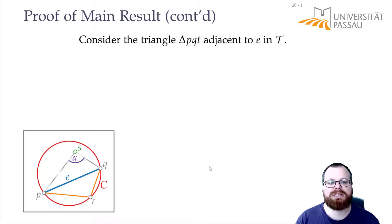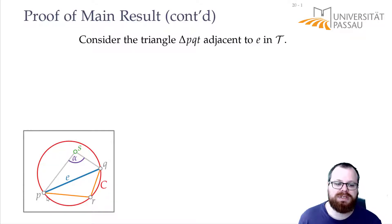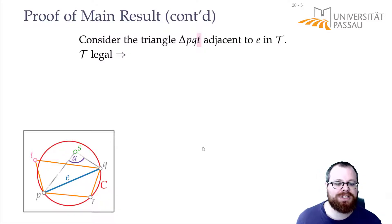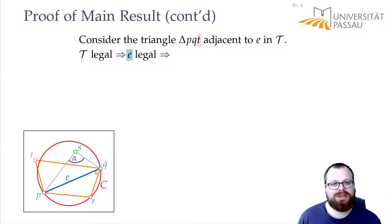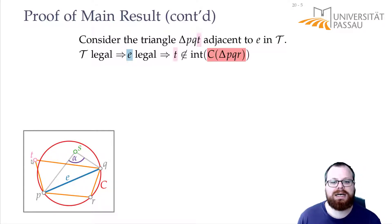Now I want to look at a different triangle. We have edge E, which lies at triangle PQR, but it also has to lie at a different triangle — the triangle with PQ and a different vertex T. The assumption is that our triangulation is legal, so edge E has to be legal. An edge is illegal if and only if vertex S lies inside the circle through those three points. So since it is legal, T has to lie outside the circle or on its boundary.